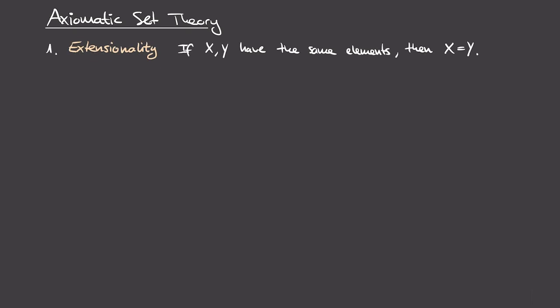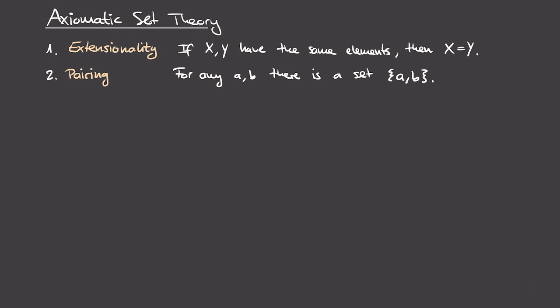The first and perhaps most fundamental axiom is called extensionality, and it tells us when two sets are to be considered equal. It says that if sets X and Y have the same elements, then X is equal to Y. This is precisely the definition for equality of sets we gave in the naive treatment of set theory, and here it forms the first axiom of ZFC. The majority of the remaining axioms assert the existence of certain sets. The second axiom is called pairing, and it tells us that whenever we have two sets, small a and small b, there is a set that contains exactly those two elements, a and b.